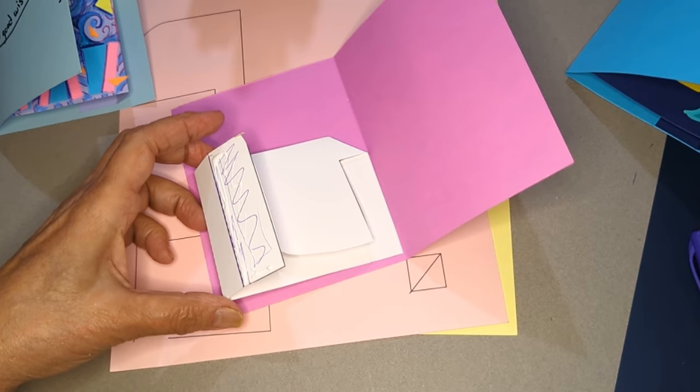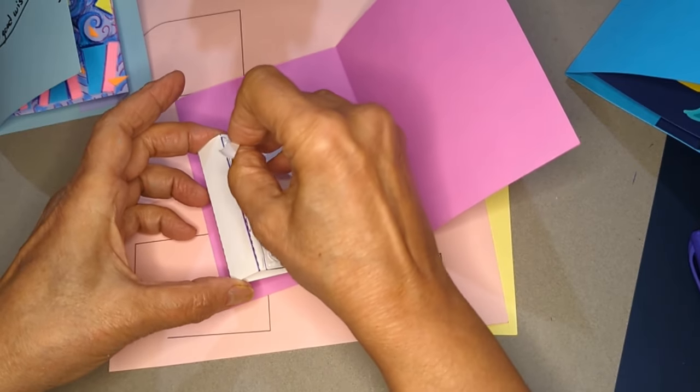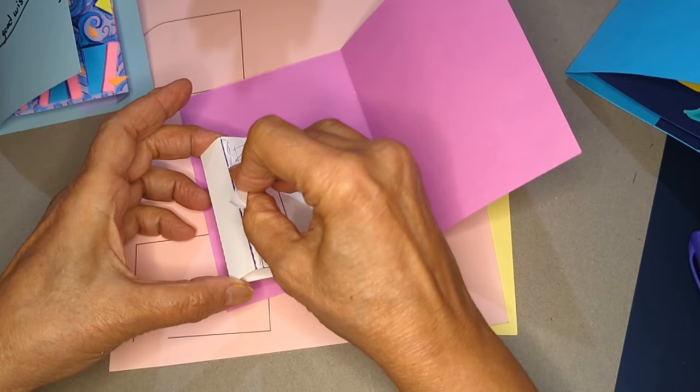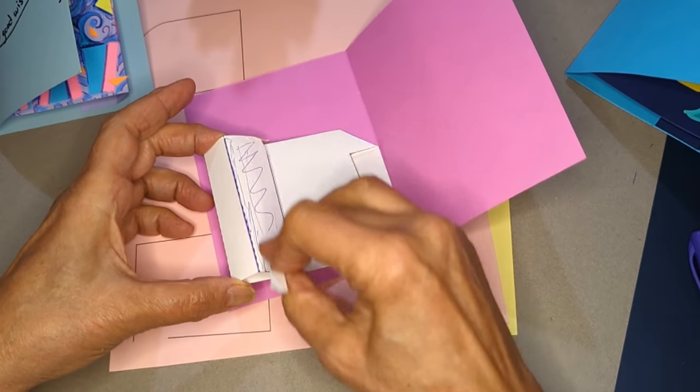You can do whatever you want. Again I don't want it to be gloppy so I'm just smoothing it out a little bit with a scrap piece of paper.